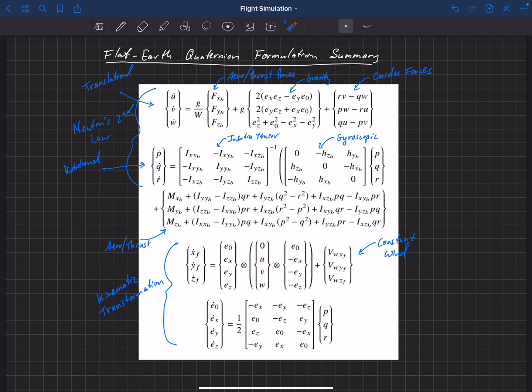So that's this top set of equations here. And then finally we need to know our change in our quaternion as a function of time. And so that depends on our current quaternion and the rotation rates on board the aircraft, P, Q, and R. That's our rotation rates in body fixed coordinates.